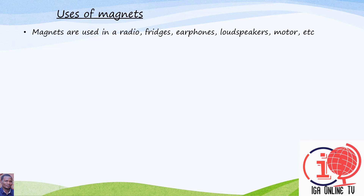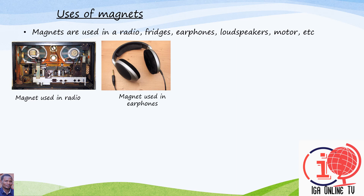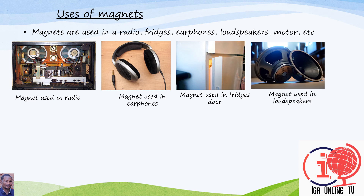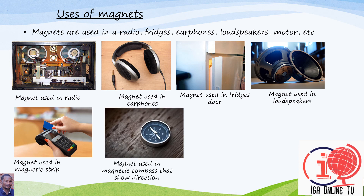For example, inside the radio there is a magnet that captures the sounds. We have earphones, and we have fridge doors — when you open a fridge, you see that it closes immediately without pushing it, because there is a magnet attracting the door. Inside the loudspeakers, we also use magnets. We have the magnetic strip — these machines are used for payment, for transport, and so on, using magnets. We also have the compass to show directions; the compass that shows direction is made of magnets, that is why we call it a magnetic compass.